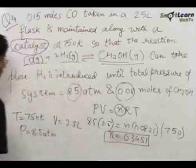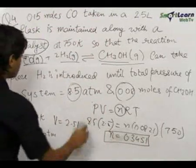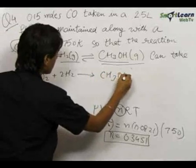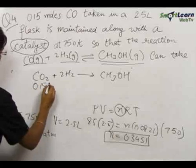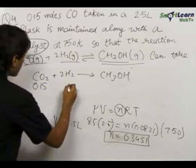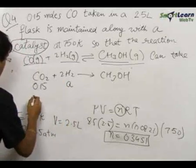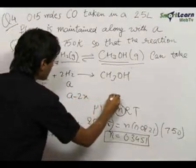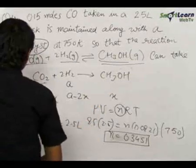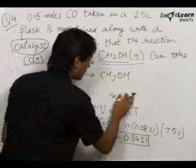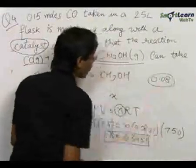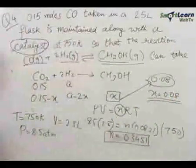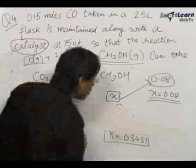Now we write the reaction: CO + 2H₂ → CH₃OH. The initial number of moles of CO is 0.15. Let the initial number of moles of hydrogen be 'a'. At equilibrium, let x moles of CO be consumed, so x moles of CH₃OH are formed. Since it is given that 0.08 moles of CH₃OH are formed at equilibrium, x = 0.08.